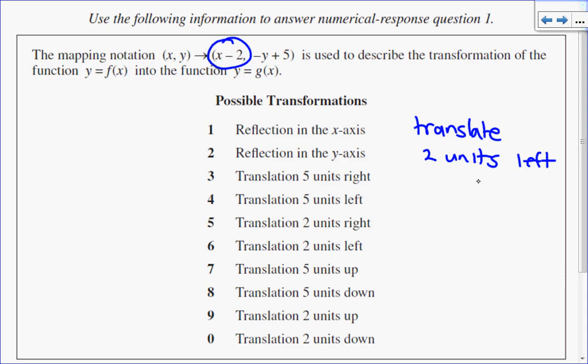Another way of saying that is I am translating two units to the left, which is a horizontal translation. So my first option is translating two units left, which is option number 6.